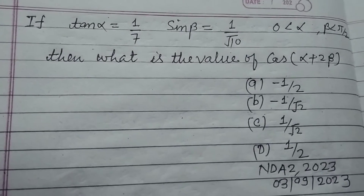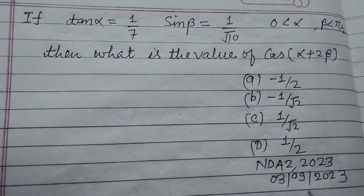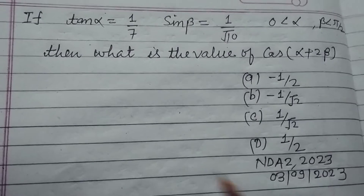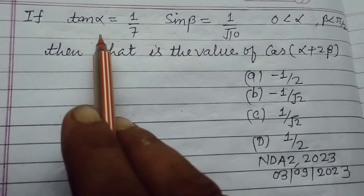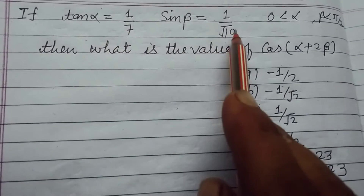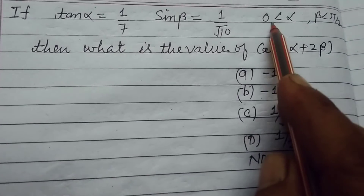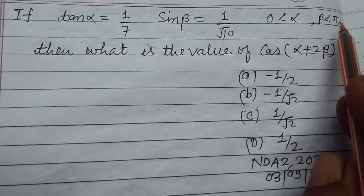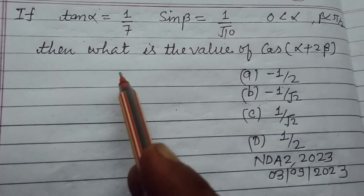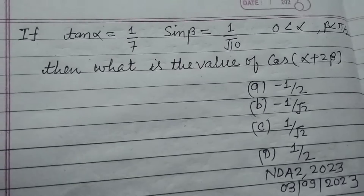Hello students, welcome to this YouTube channel. This is a question from NDA Second 2023. If tan α equals 1 by 7, sin β equals 1 upon root 2, α is greater than 0 and β is less than π by 2, then what is the value of cos(α + 2β)?